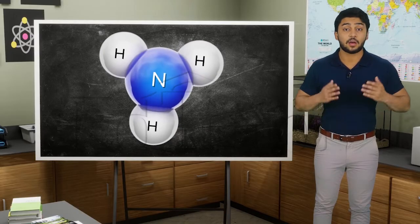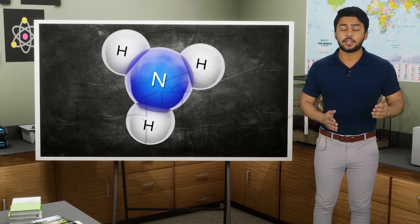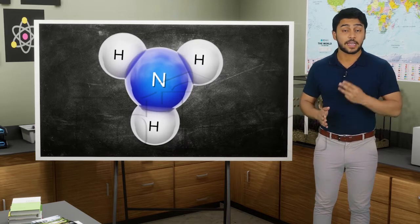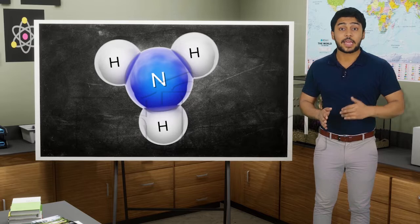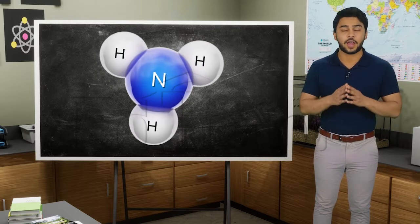Our third example, ammonia, shows that the valency of nitrogen is three because nitrogen can make three bonds with hydrogen.